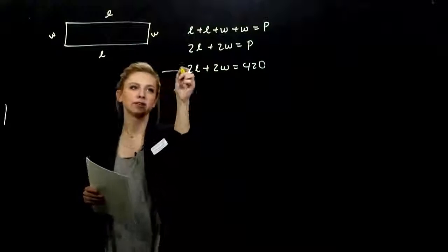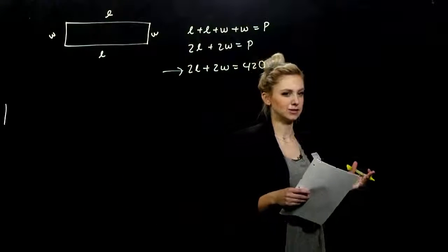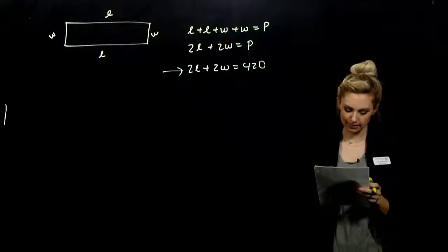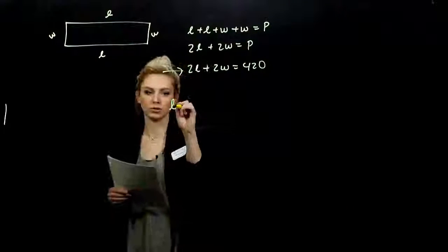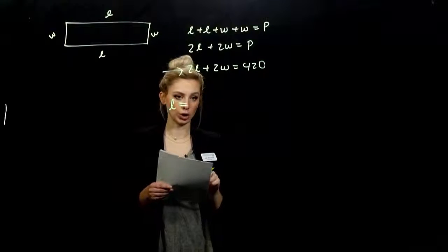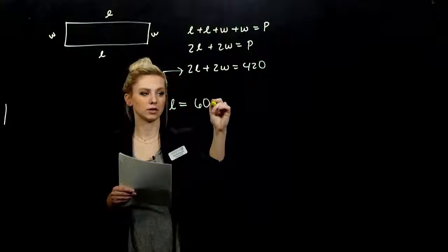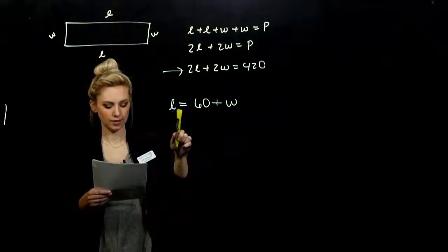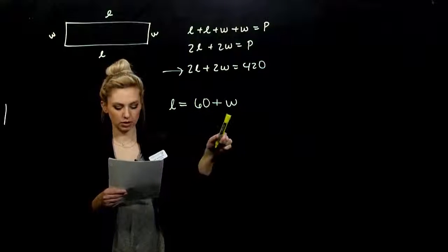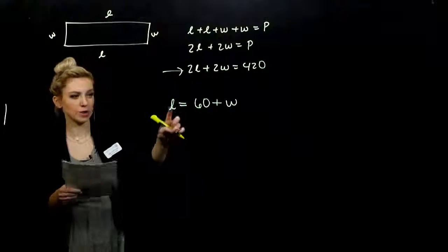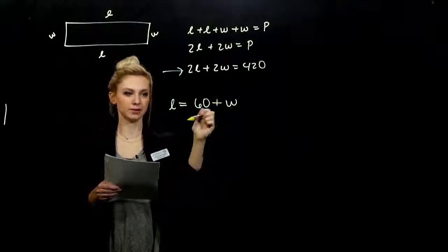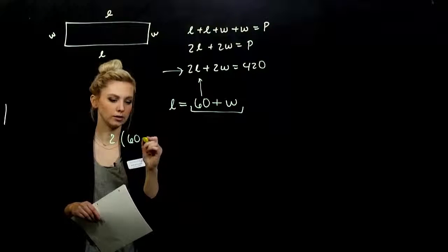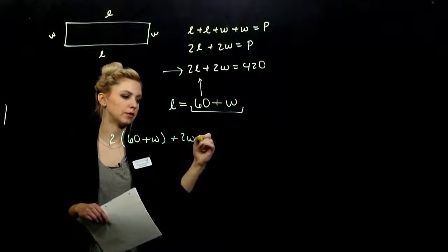So we have an equation here, but it's in two variables. So I can't solve it yet. We need another piece of information. So the other piece. The length of the field is, so L is equal to what? 60 yards longer. So 60 yards longer adding to the width of the field. So the length of the field is 60 yards longer than the width. So I can rewrite L in terms of W. Since I know L is equivalent to this, I'm going to plug it in and substitute. So two times what I know L is equal to, plus two times the width gives me 420.